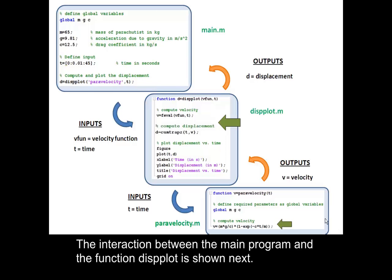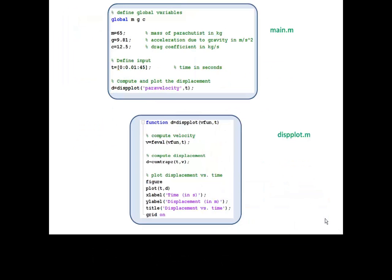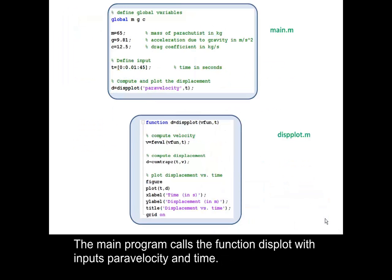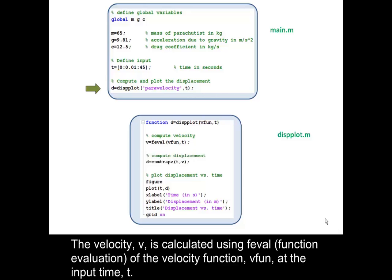The interaction between the main program and the function DISPLOT is shown next. The main program calls the function DISPLOT with inputs PARA VELOCITY and TIME. The velocity V is calculated using FEVAL (Function Evaluation) of the velocity function VFUN at the input time T.